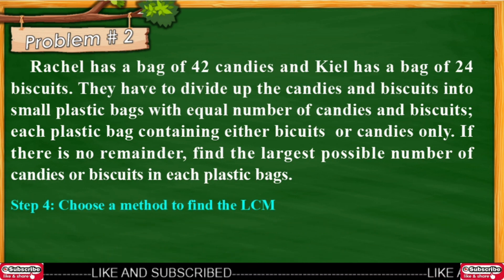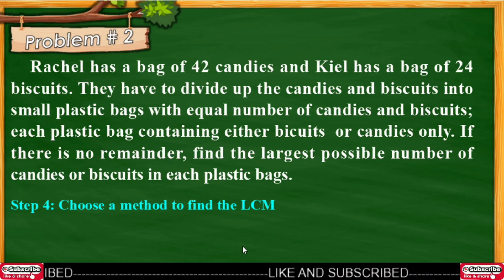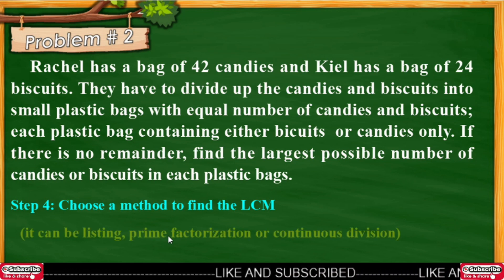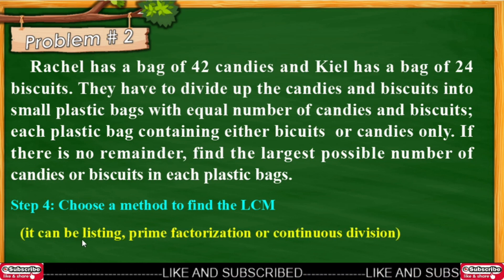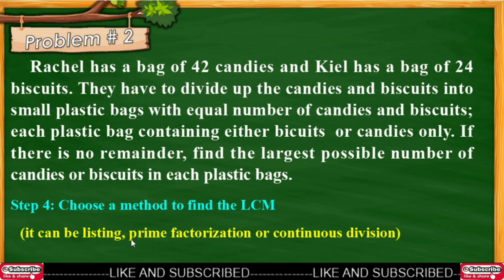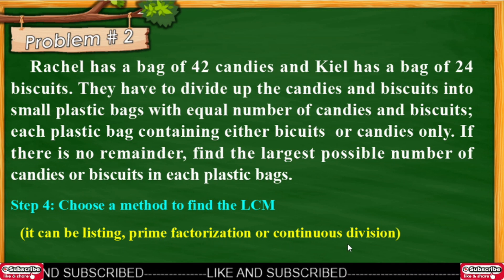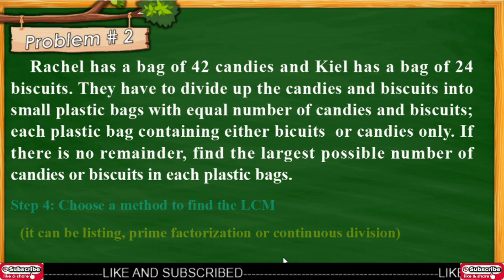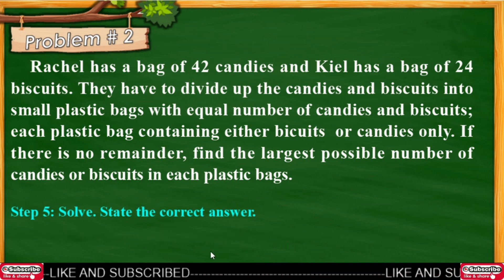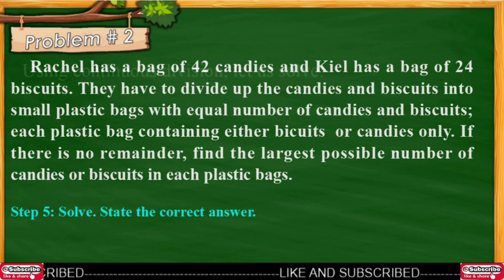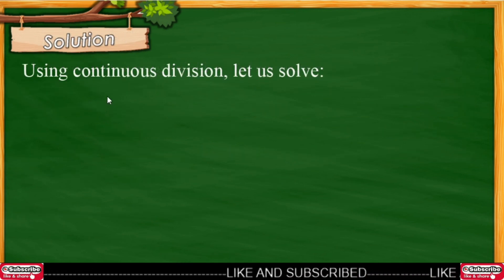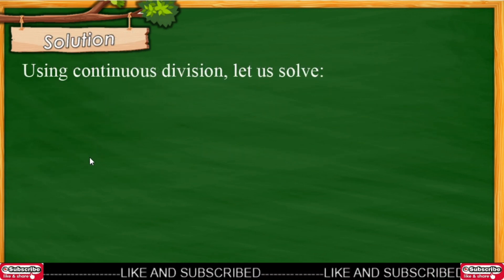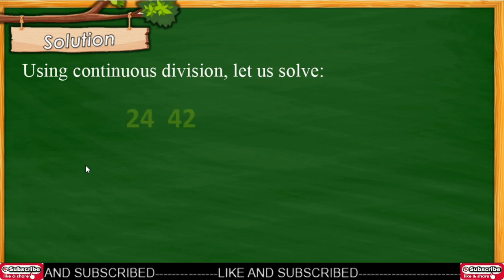Let's solve step by step. Step 1: What is asked? The largest possible number of candies or biscuits in each plastic bag. Step 2: What are the given? 42 candies and 24 biscuits. Step 3: Know the operation to be used — division, because the problem involves GCF since it mentions "largest possible number of candies or biscuits in each plastic bag." Step 4: Choose a method to find the GCF — it can be listing, prime factorization, or continuous division.